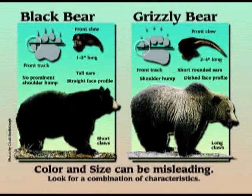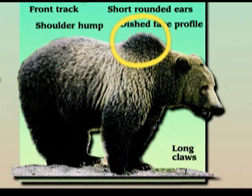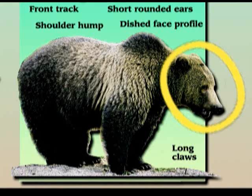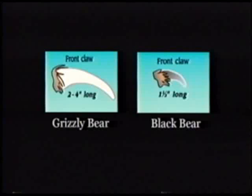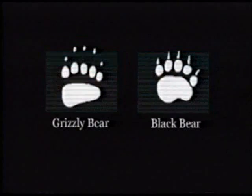Grizzly bears once roamed from the west coast of North America clear across the Great Plains and into the Ohio and Kentucky valleys. Generally, grizzly bears are larger than black bears and can be distinguished by longer curved claws, hump shoulders, and a face that appears concave. The claws on a grizzly's front feet are about the same length as a man's finger — roughly two and a half to five inches — considerably longer than those of the black bear, and they usually show up in footprints left behind.